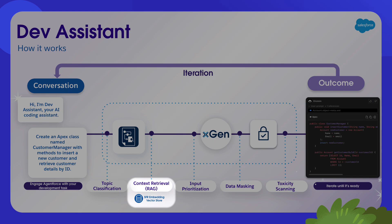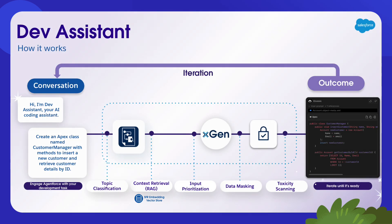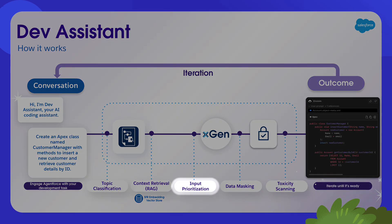RAG has access to all your local custom object metadata, and when you make a request, RAG grounds the code generation process, including this metadata. Plus, we add code snippets from your local workspace as additional context. Then, we have the input prioritization step, where Dev Assistant analyzes your requests, prioritizes your prompts, chat history, and different types of context.